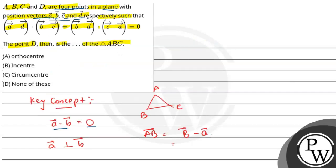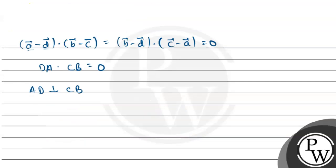DA vector is perpendicular to BC vector. And if BD vector · CA vector equals 0, then BD is perpendicular to CA.